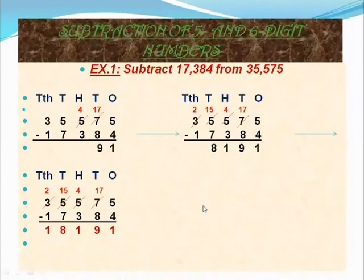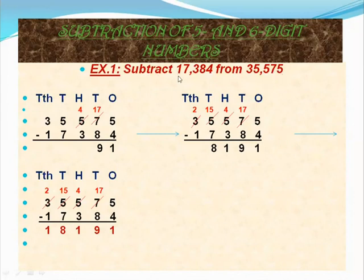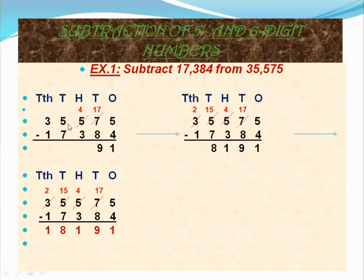Next, subtraction of 5 and 6-digit numbers. Example 1: subtract 17,384 from 35,575. First write the larger number 35,575 on top and 17,384 below. We subtract starting from the ones place. In the ones place, 5 and 4 are there — 5 minus 4 equals 1. In the tens place, 7 and 8 are there — 7 is smaller than 8, so subtraction is not possible.